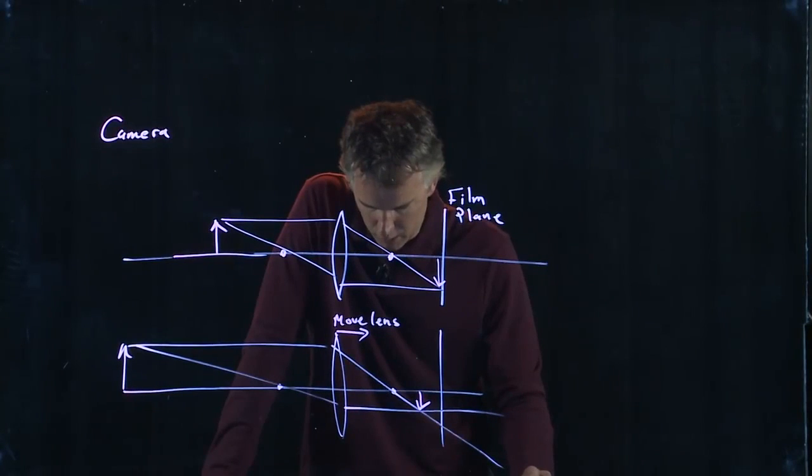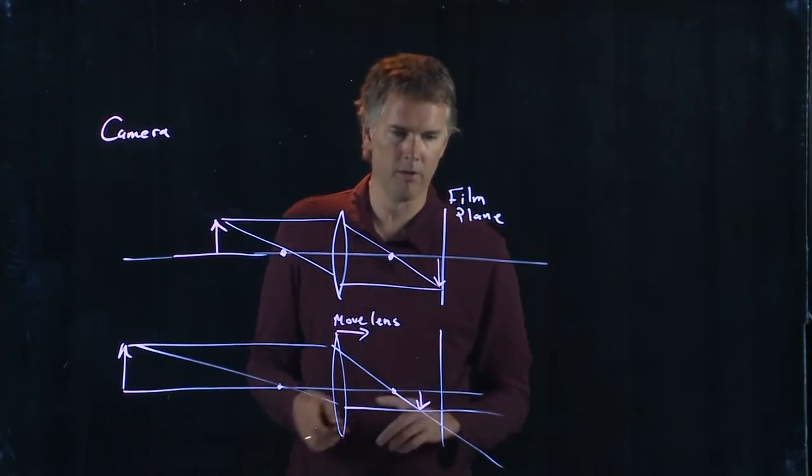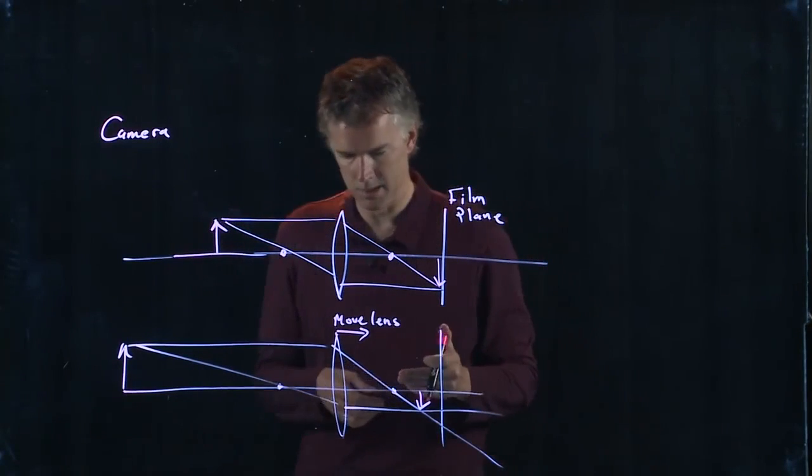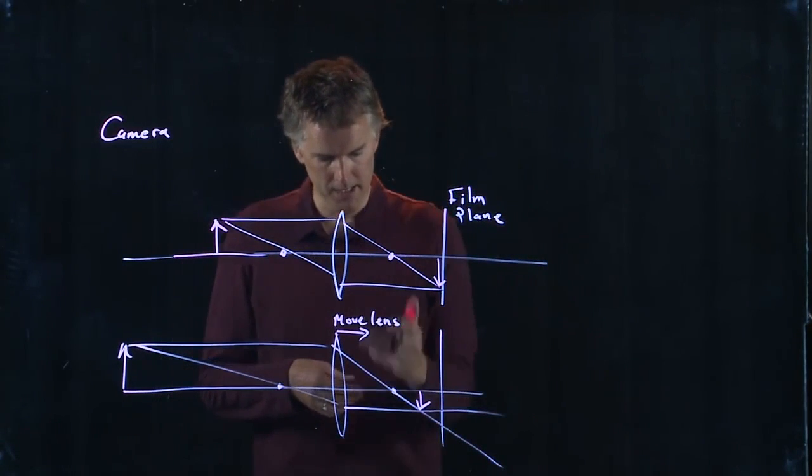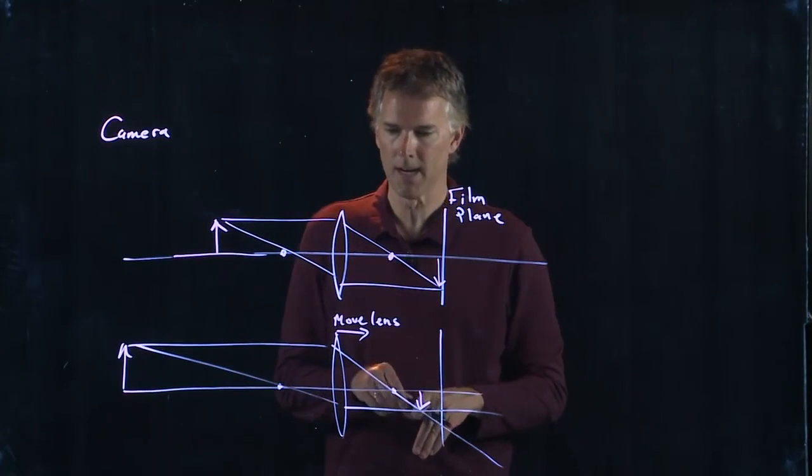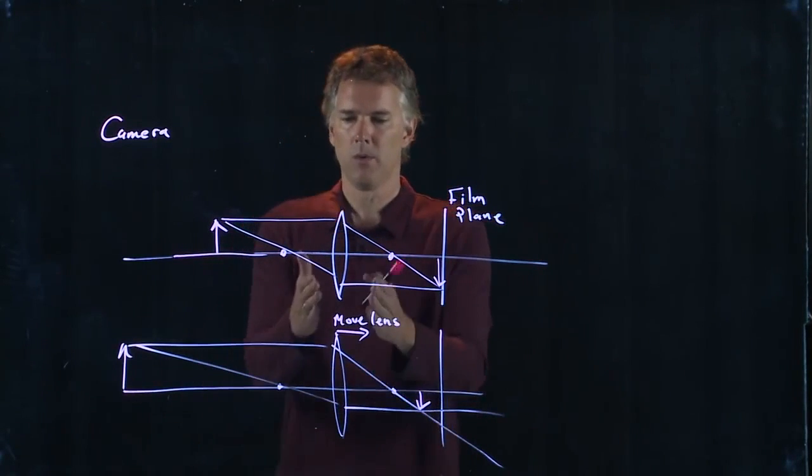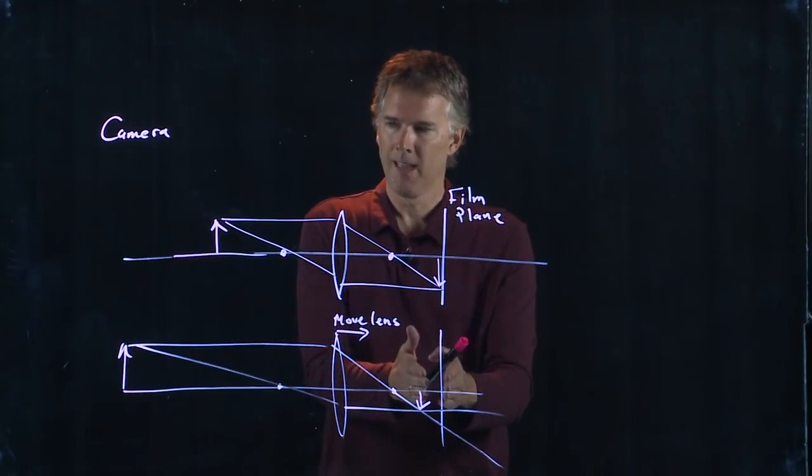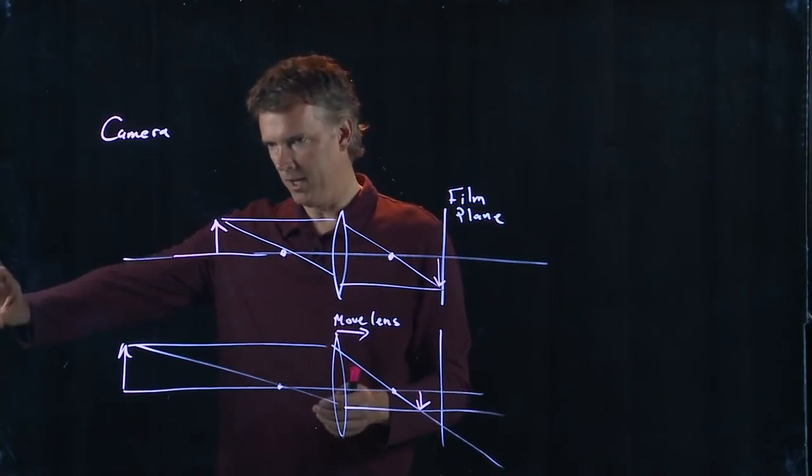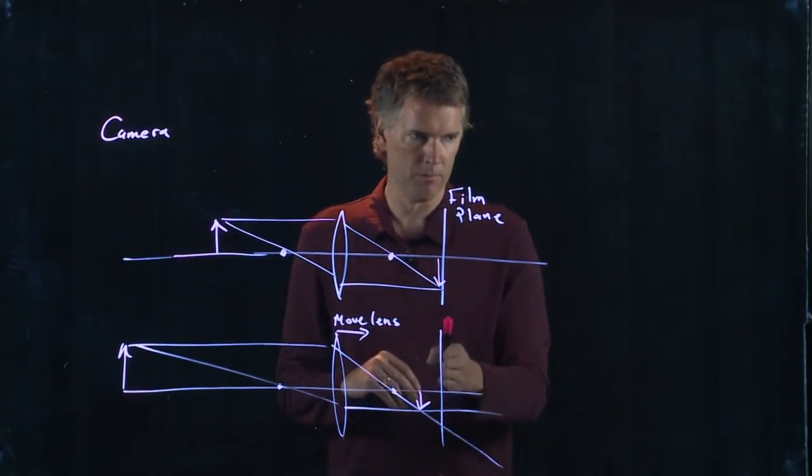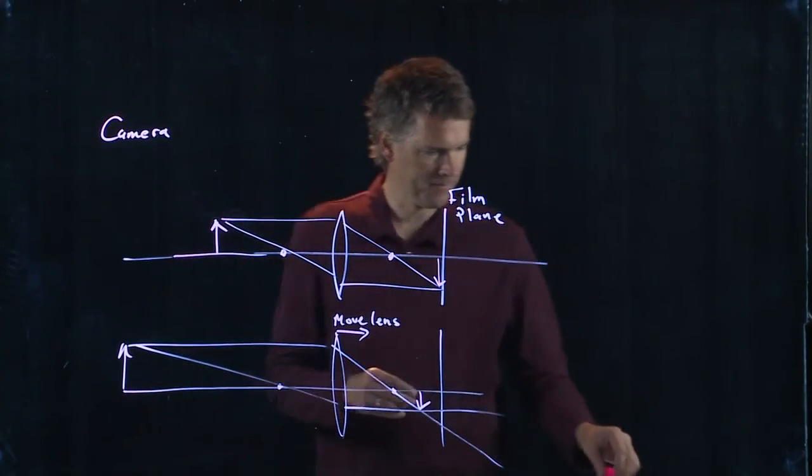It says move the lens closer to the sensor or the film, sensor's CCD array if it's like your digital SLR. And it does say that that is the right answer, okay? So when things get further away, you want to move the lens closer to the film. And in fact, when they get out at infinity, the focal point should be at the film plane. Okay?